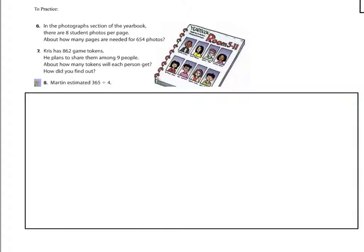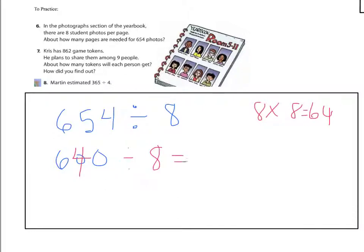All right, let's try estimating for these. So we have 654 divided by eight. We want something that can easily be divided by eight. We can try front-end rounding. 600. No, that can't be divided by eight. Can just 60 be divided by eight? Eight times something equals 60. Eight times eight equals 64. So I guess I could make this 640 divided by eight, which would be pretty easy, because now I'm going to annex that zero. 64 divided by eight is eight. And I add that zero back on, making it 80.